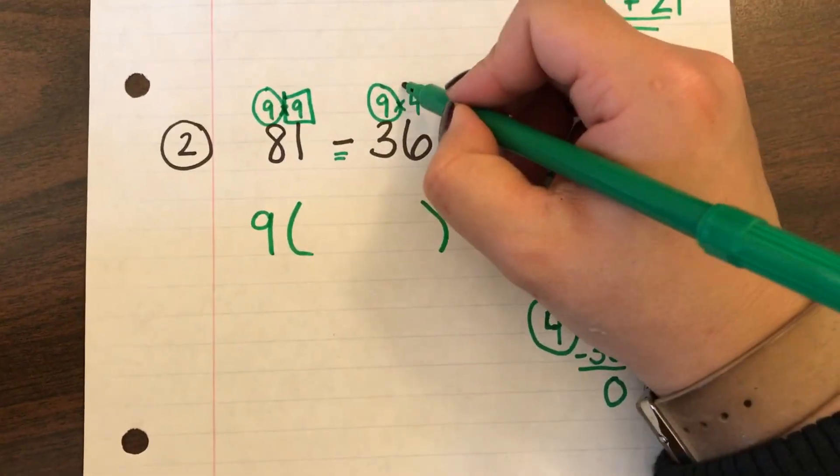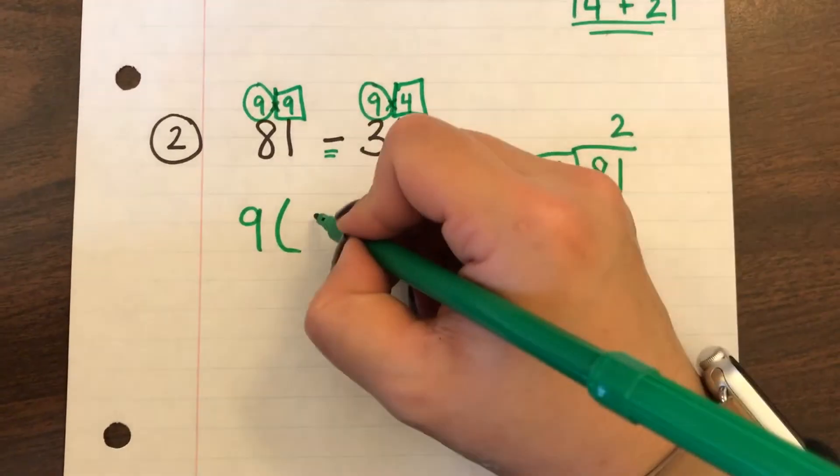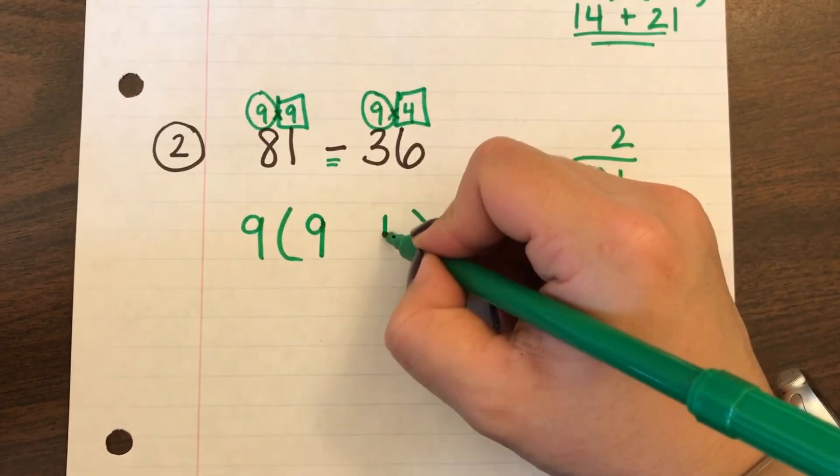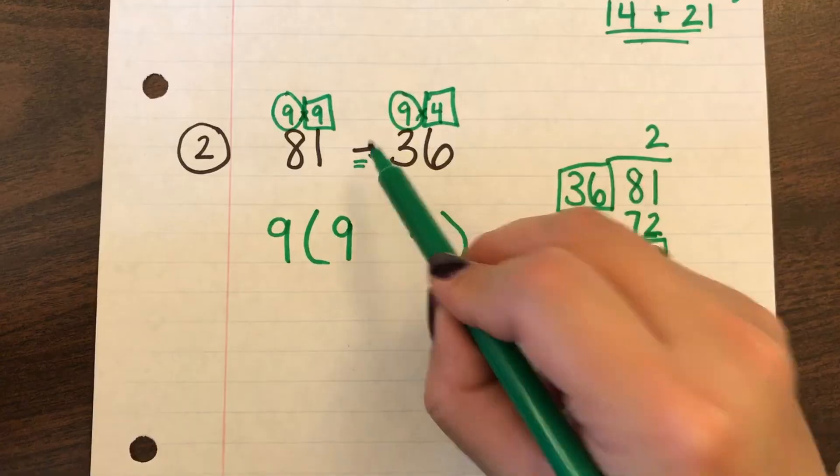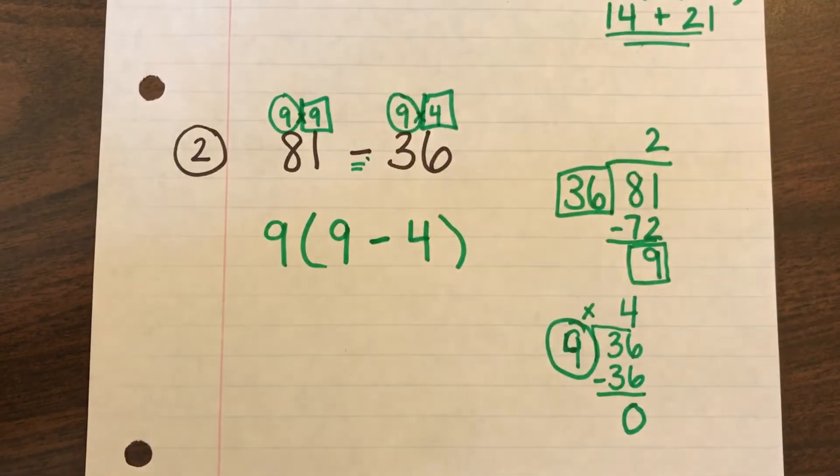So what I have left are 9 and 4. Okay and those are going to stay. Those are the ones that were in the parenthesis house. And since there was a minus sign that's just going to be a minus sign down here.